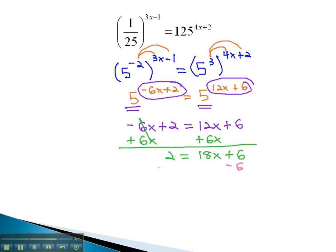Subtracting 6 from both sides, we get negative 8... oops, negative 4, sorry, is equal to 18x. Finally, dividing both sides by 18 and reducing, we end up with x is equal to negative 2 ninths.